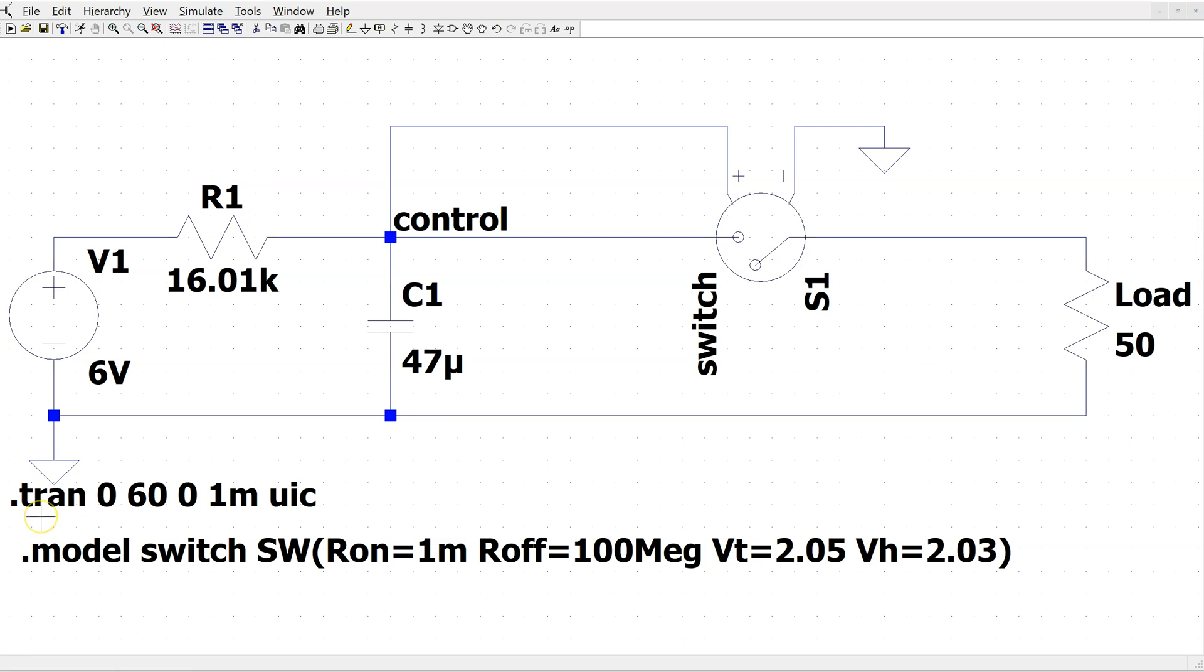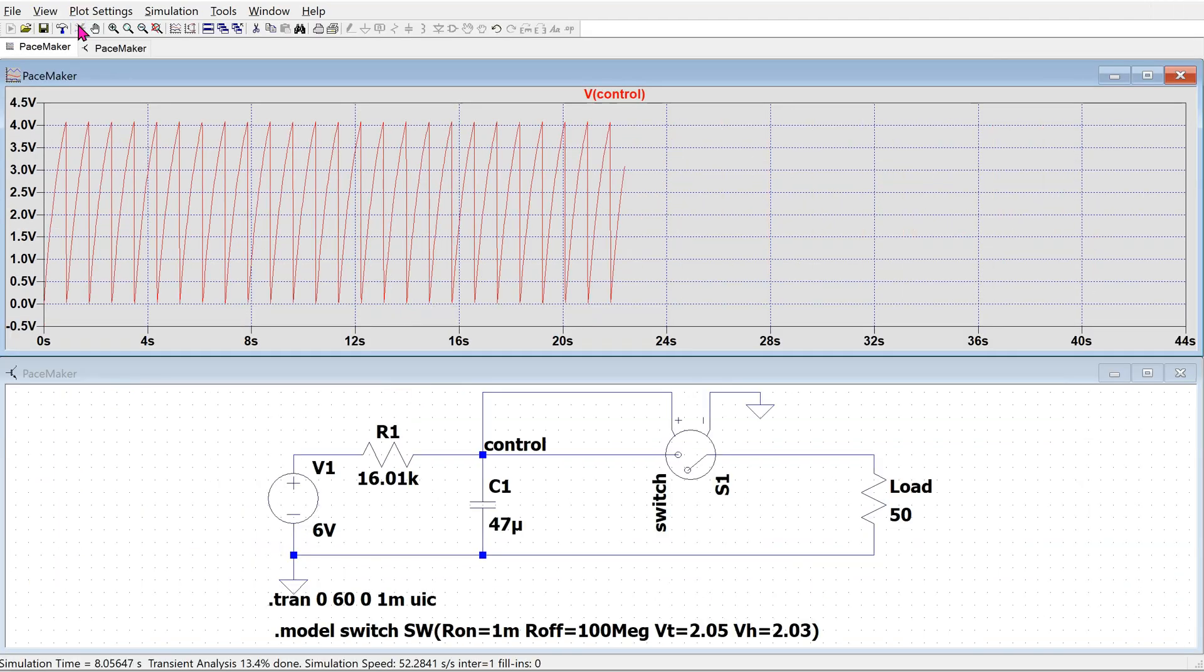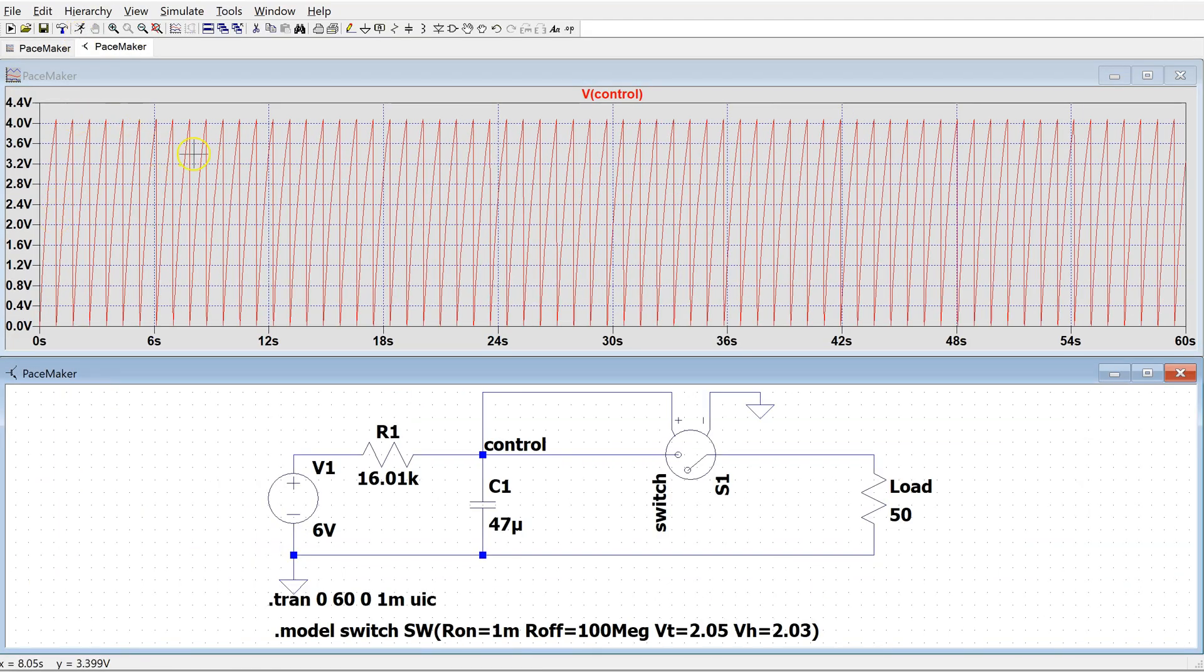We are running a transient simulation for a duration of one minute. Also, we are plotting the steady-state solution. When we simulate, we obtain the output voltage and it can be verified that this corresponds to 70 beats per minute.